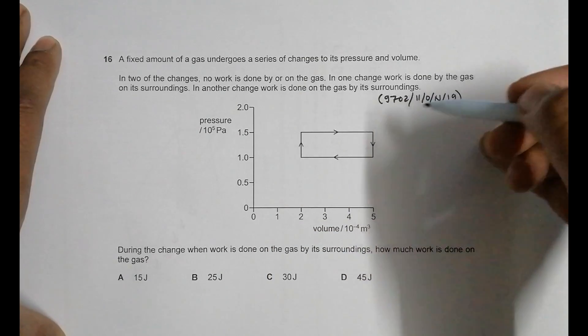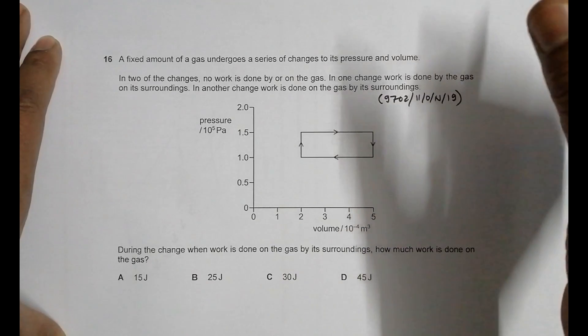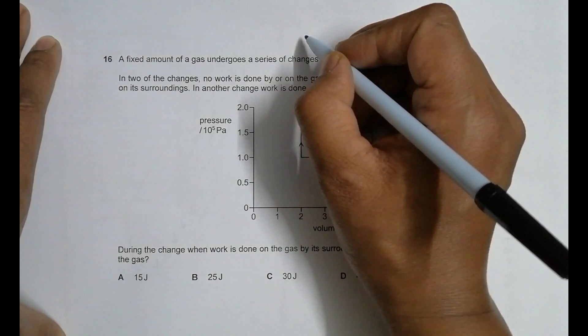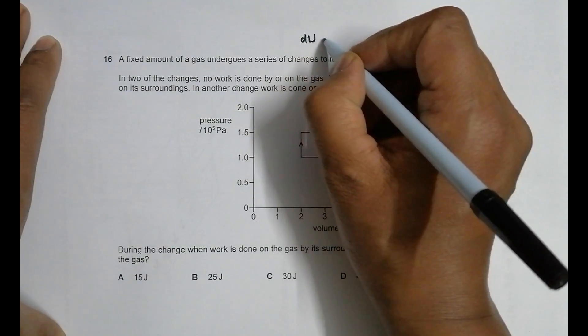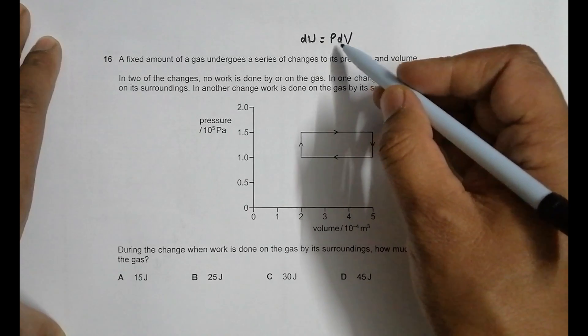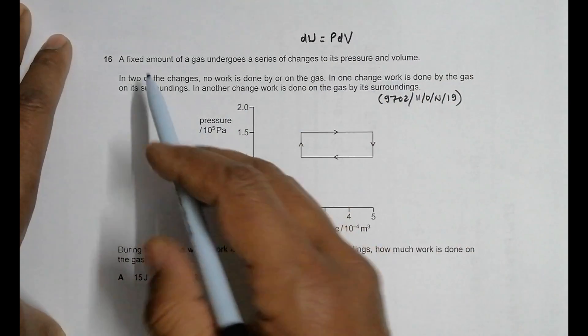This question is concerned with the chapter work, energy, and power. It covers the topic which says that when a gas expands, the work done is given by dW equals P into dV, where P is constant and only volume changes.